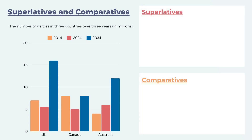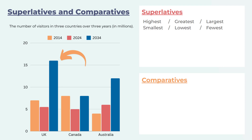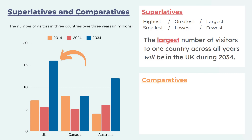Superlatives are words that show us the most or least of something. For the most, we have: highest, greatest, largest. For the least: smallest, lowest, and fewest. Let's take a look at how we can use these words. Starting with the UK in 2034 — the largest number of visitors to one country across all years will be in the UK during 2034. 'Largest' indicates the most, and I'm comparing across all years while describing one specific data point.